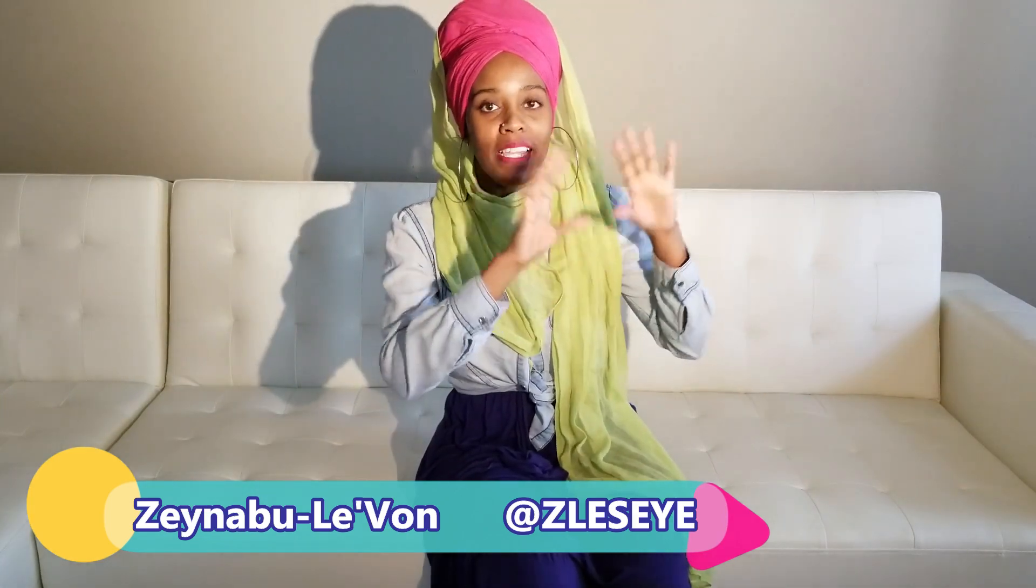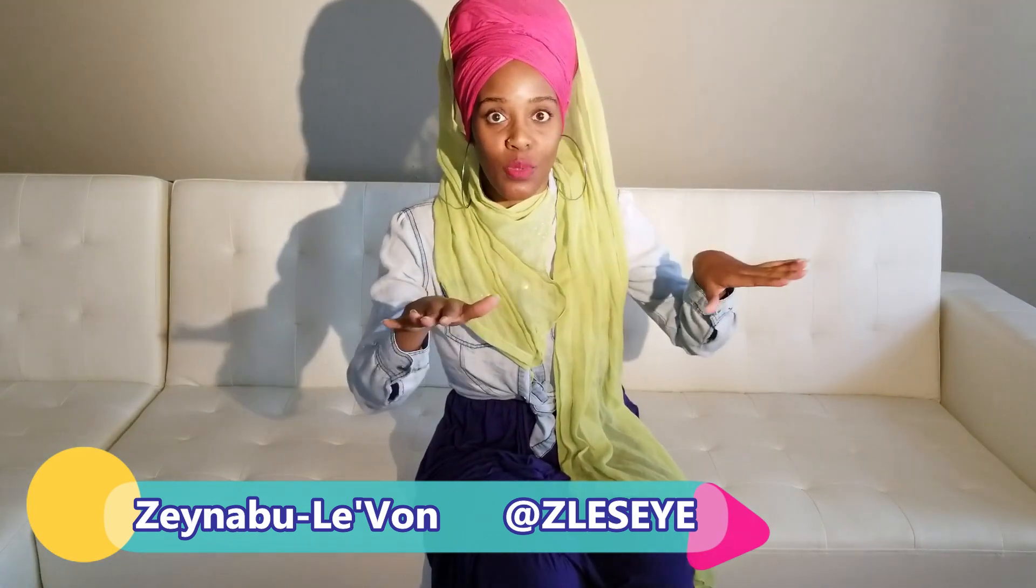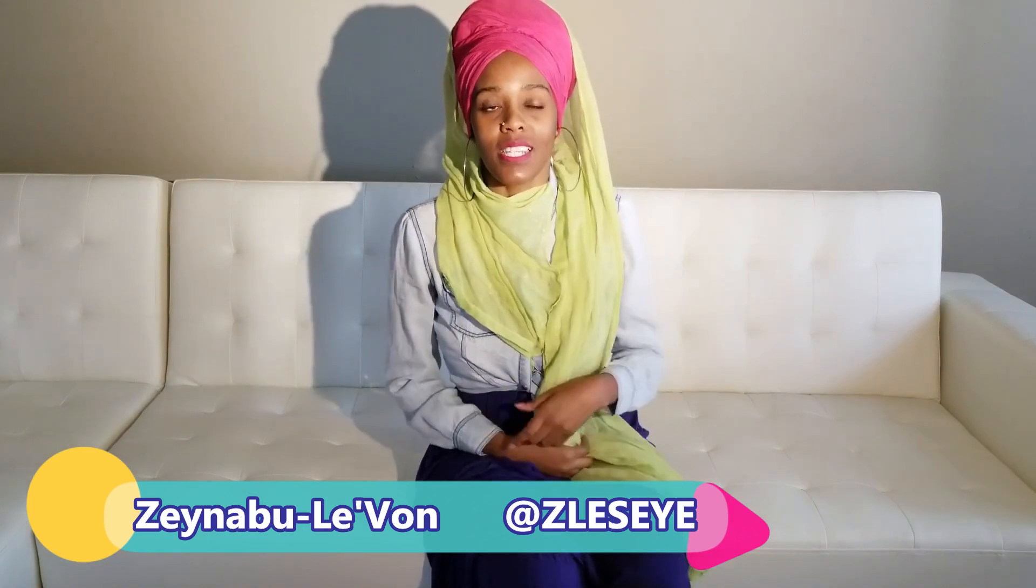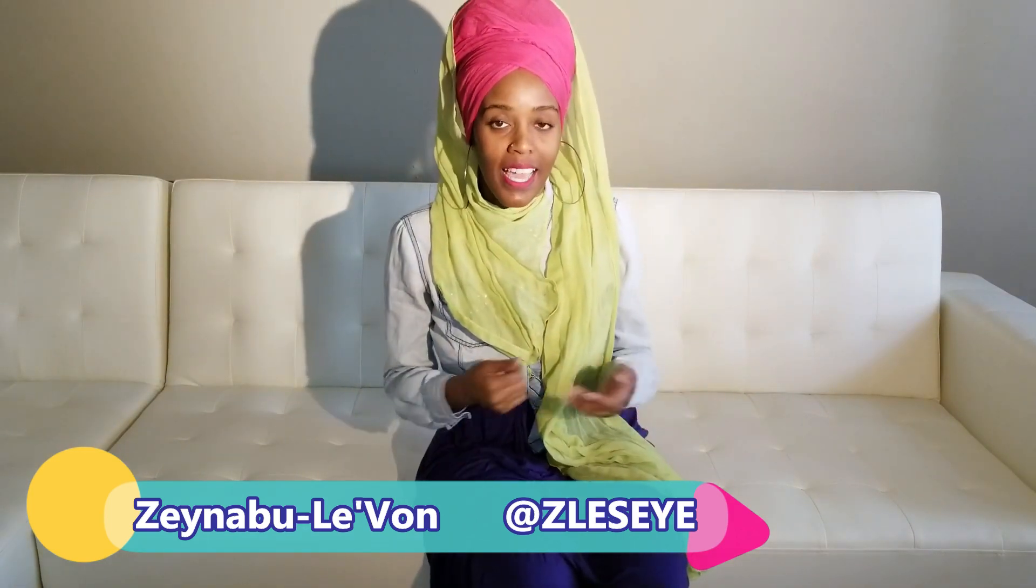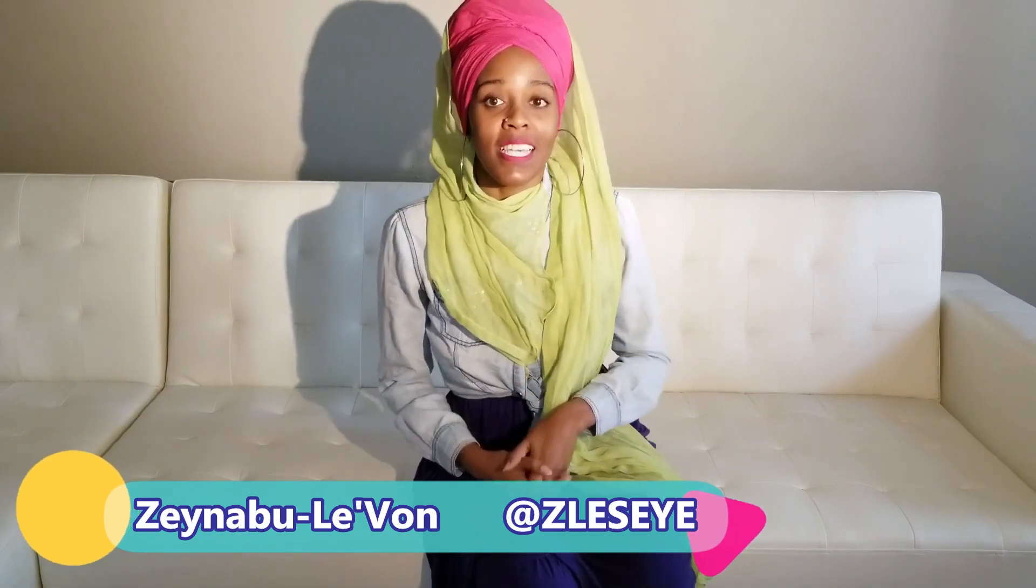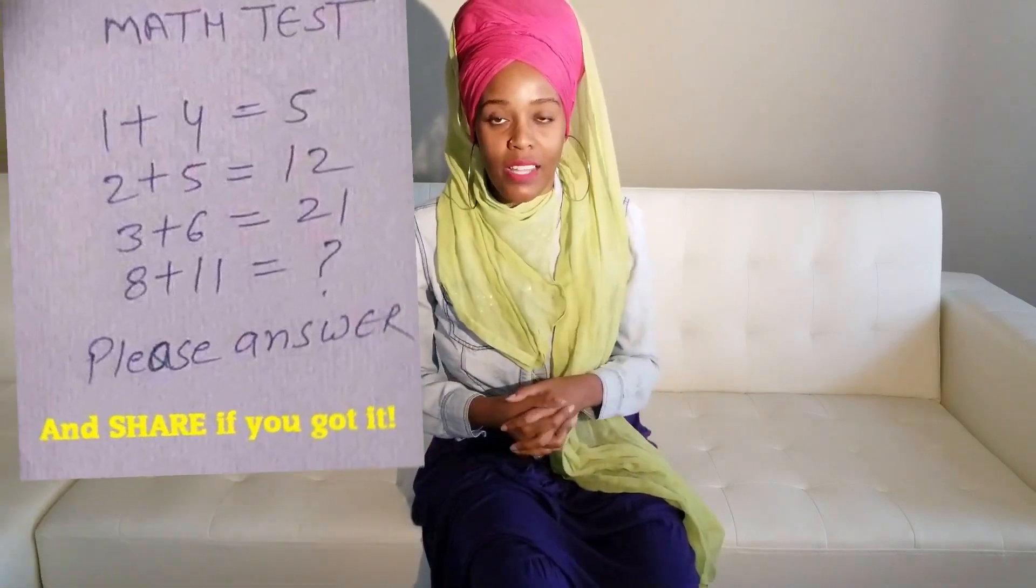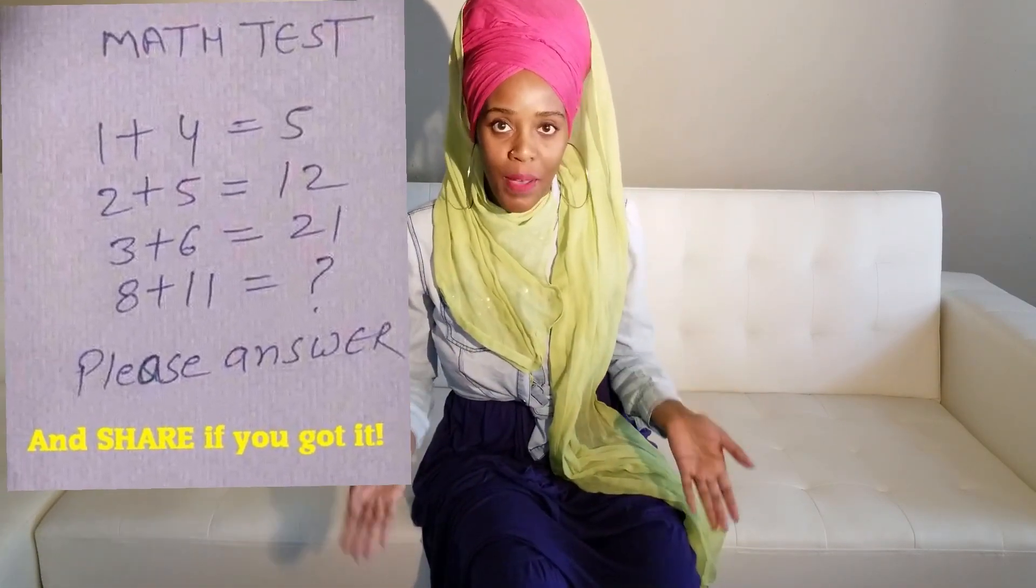They give you an equation and then an equation with a number missing at the bottom. Right now there's one going around on Facebook and the top two answers for this one is 40 and 96. So, let me show you what the riddle is. You see that? Four lines, you got three equations and then there's a number missing at the bottom.